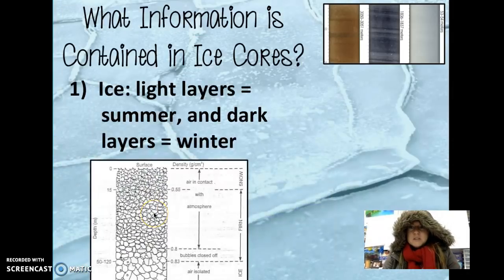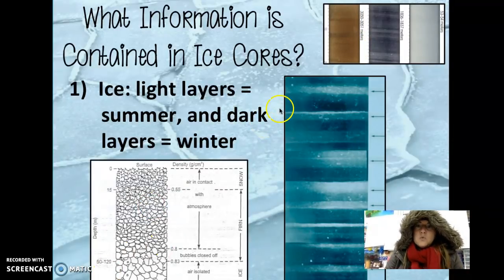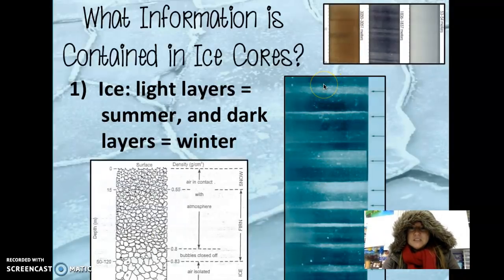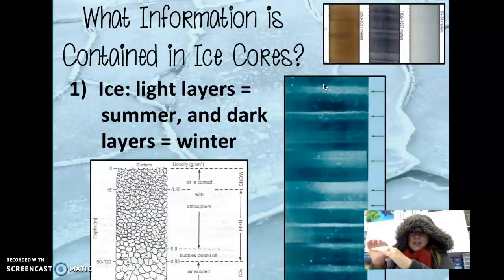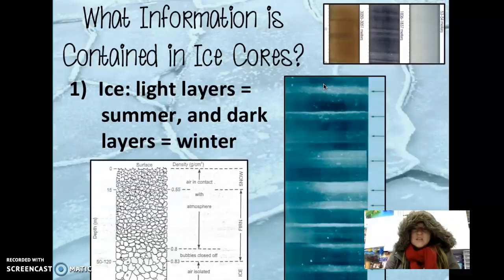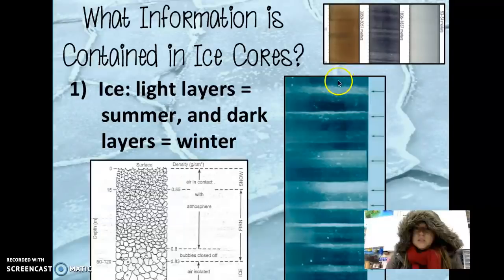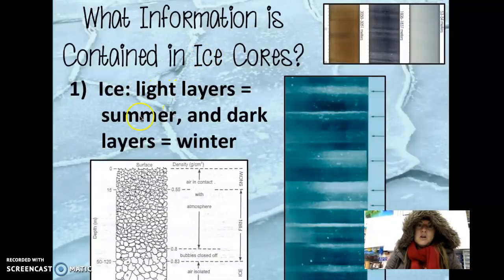One thing you may notice with ice cores is that they look different for each layer deposited. In this ice core you see darker bands and lighter bands alternating. That indicates a varve — basically one year. This darker layer and lighter layer indicate one year of snow deposited. The lighter layers indicate summer deposition and the darker layers indicate winter deposition.